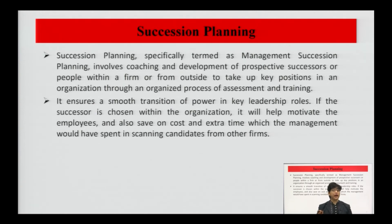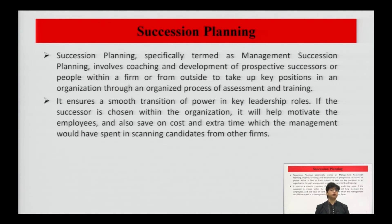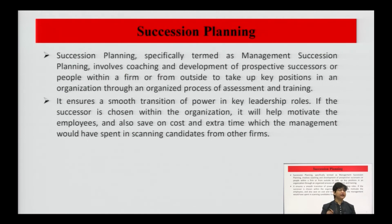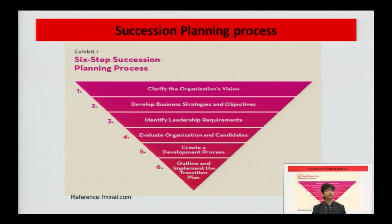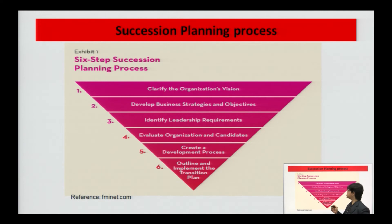Succession planning has to be done well in advance before facing a vacancy in leadership positions. Organizations should be doing an ongoing process of identifying potential employees who can take up key positions. The first and foremost step — this is a six-step process — is to clarify the organization's vision. Unless the organization has a clear vision about where they want to be 5, 10, or 20 years down the line, it is not possible to identify the key roles.